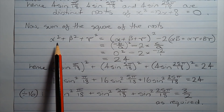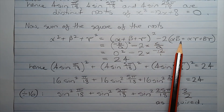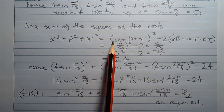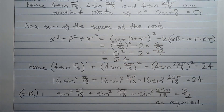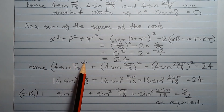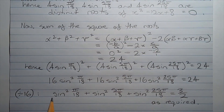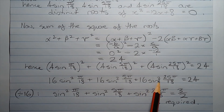Now, the sum of the squares of the roots — alpha squared plus beta squared plus gamma squared — equals alpha plus beta plus gamma all squared minus 2 times alpha beta plus alpha gamma plus beta gamma. That equals negative b over a all squared minus 2 multiplied by c over a, which equals 0 squared minus 2 multiplied by negative 12 over 1, giving 24. Hence, 4 sin pi over 18 all squared plus 4 sin 5 pi over 18 all squared plus 4 sin 25 pi over 18 all squared equals 24. Expanding the brackets, we get 16 sin squared pi over 18 plus 16 sin squared 5 pi over 18 plus 16 sin squared 25 pi over 18 equals 24.